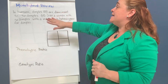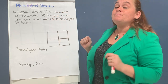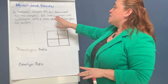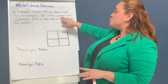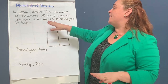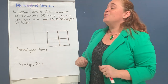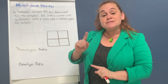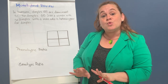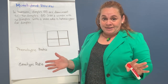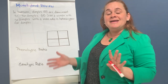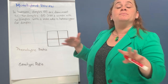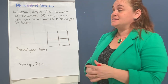It reads: in humans, dimples are dominant to no dimples. Let's cross a woman with no dimples with a man who is heterozygous for dimples. So let's start finding what the genotype is for the woman, and then the genotype for the man, before we actually do the crossings.